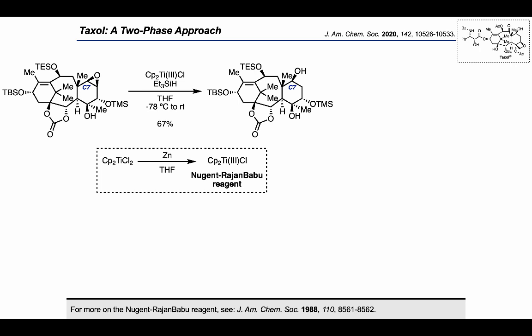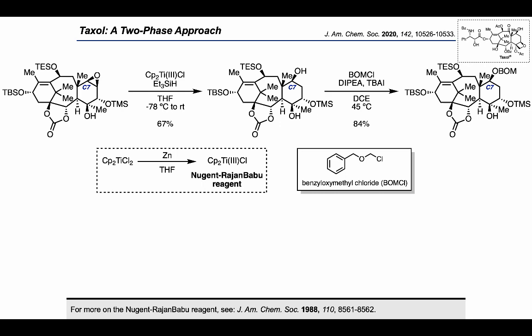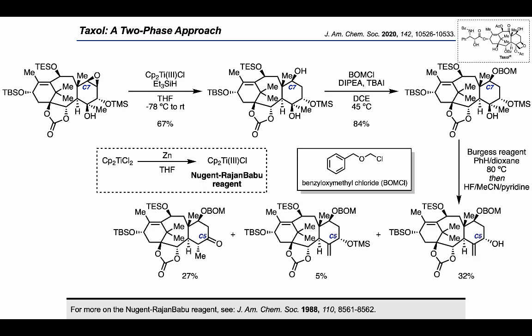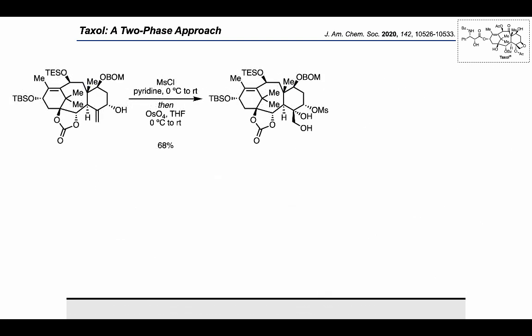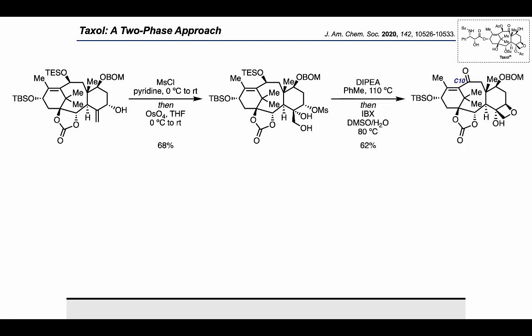The resulting secondary alcohol was protected with PMB chloride before proceeding. Burgess reagent was used to affect the dehydration of the free tertiary alcohol, giving the desired alkene product with the free allylic alcohol in 32% yield. Five percent of a byproduct still containing a TMS group on the allylic alcohol was also obtained, as well as a byproduct with a ketone at C5 — the former could be converted into the desired product using HF-pyridine. To form the oxetane ring of the target, methanesulfonyl chloride was used to activate the allylic alcohol, after which dihydroxylation with osmium tetroxide resulted in the product shown. Heating that intermediate with Hünig's base in toluene resulted in oxetane ring closure.